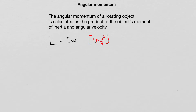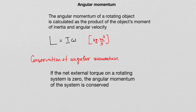Just like for linear momentum we talked about conservation of linear momentum — which stated that for a system not under the action of a non-zero net force, the linear momentum is conserved at all times — for a rotating object not under the action of a non-zero net torque, the angular momentum is conserved. This can be generalized: if the net external torque on a rotating system is zero, the angular momentum of that system is conserved.